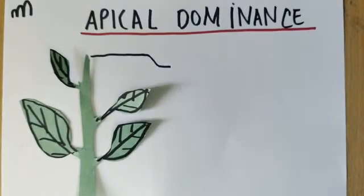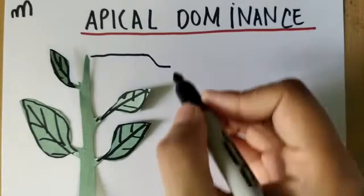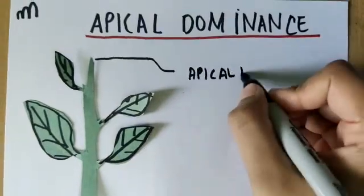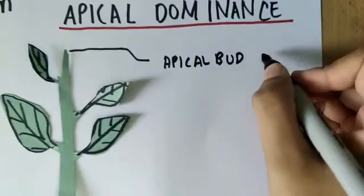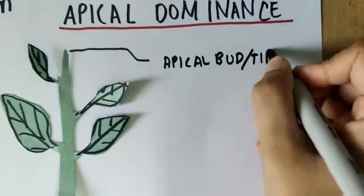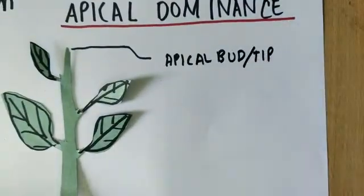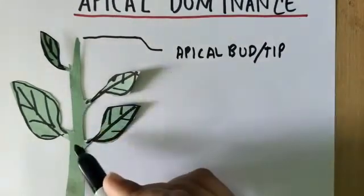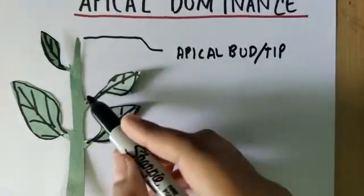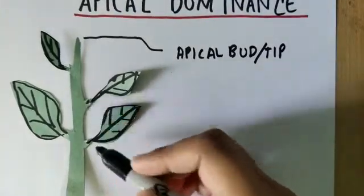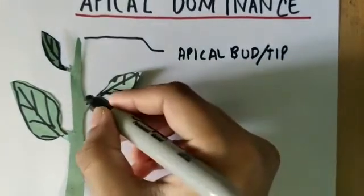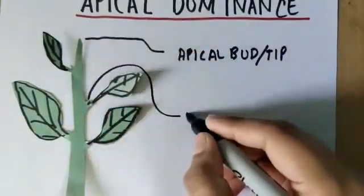...the meristematic cells where growth happens is known as the apical bud or apical tip. If you look closely in a plant you'll notice that between the main stem and the leaf there's a tiny stem that protrudes from there. That's known as lateral buds.